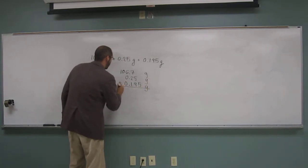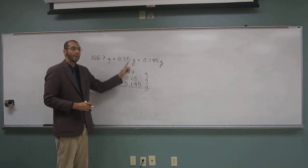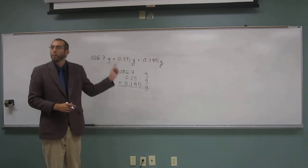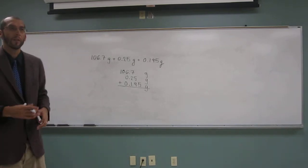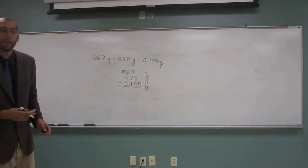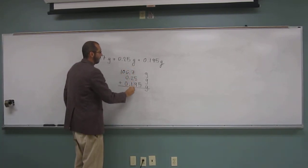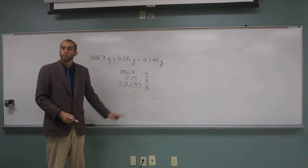So our addition-subtraction rule tells us what? To go to the one that has the least number after the decimal. So the least number of significant figures after the decimal. Is everybody okay with that? So we would cut it off right there, like that.